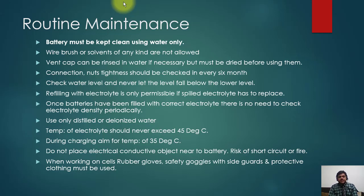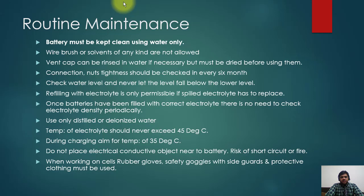Connection nut tightness should be checked every six months. Check the water level and never let it fall below the lower level mark — if the level falls below that point, the battery plates will be exposed to air and will be damaged very quickly. Refilling with electrolyte is only permissible if spilled electrolyte needs to be replaced. Normally, if the electrolyte level is low, you simply refill with distilled water. If you keep adding electrolyte, the specific gravity will rise, which is not recommended by the manufacturer. Once batteries have been filled with the correct electrolyte, there is no need to check electrolyte density periodically.